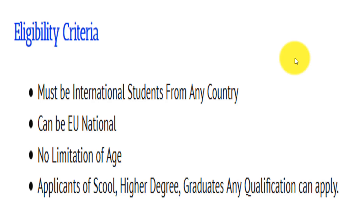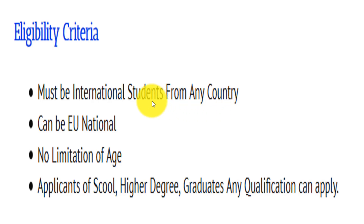Now we take a look at the eligibility criteria for this scholarship program. First, you must be an international student. It means if you are a local student then you cannot join these courses for free. If you are an international student then you can join these courses free online on the Howard University website. The question that comes to mind is: who is an international student? The answer is very simple — if you are studying in a country you are not a national of, then you are an international student.